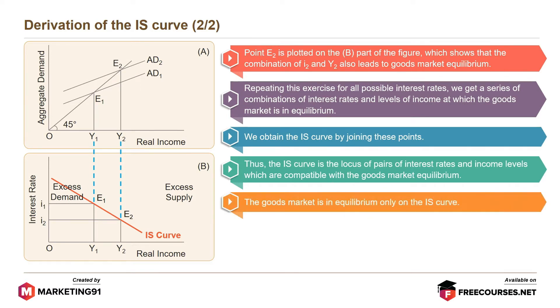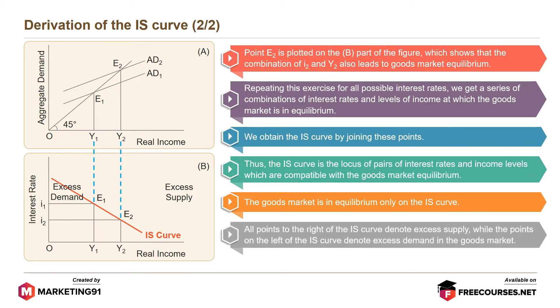The goods market is in equilibrium only on the IS curve. All points to the right of the IS curve denote excess supply, while points to the left of the IS curve denote excess demand in the goods market.